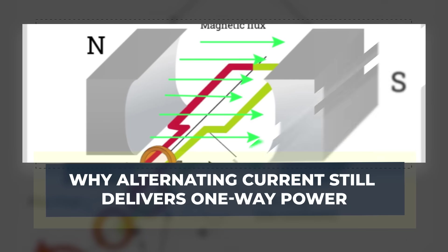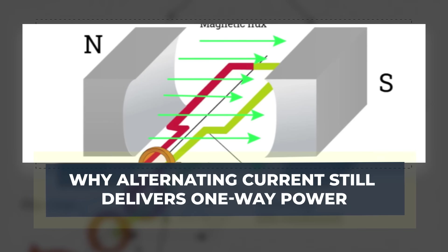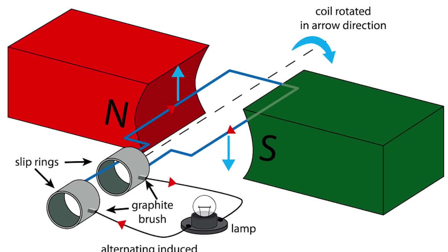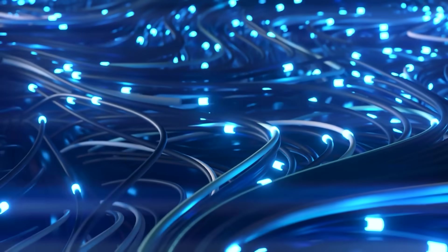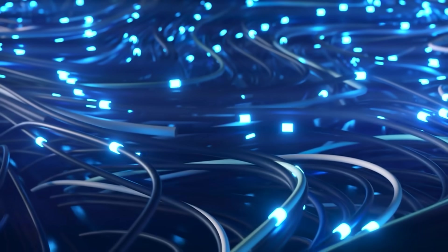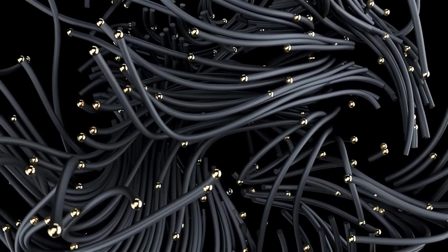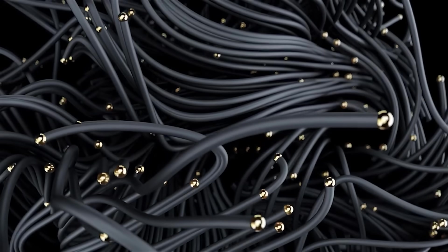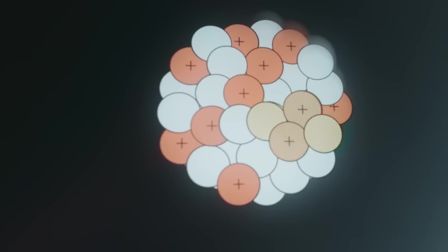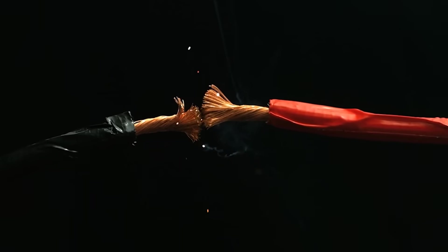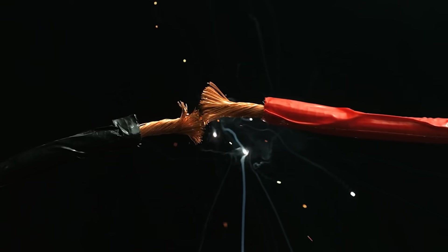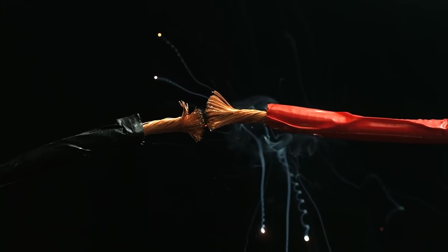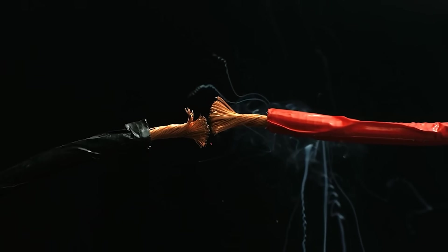Why alternating current still delivers one-way power. Replace the battery with an AC source. Now the direction of current reverses every half cycle, and charges in the wire mostly jiggle back and forth. Over a full cycle, a given electron may end almost where it started. That fact often tempts people to say, so nothing moves, so how can anything be powered?